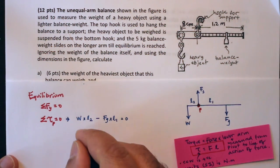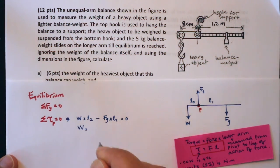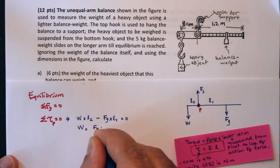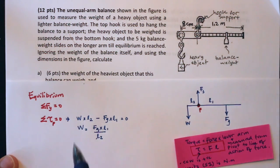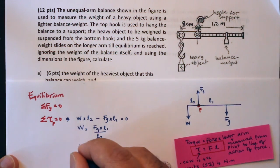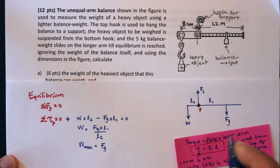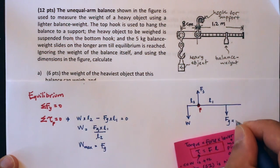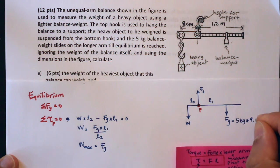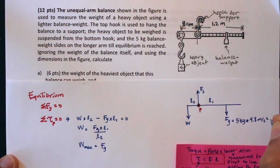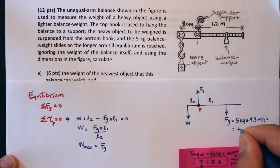And this is how you would calculate what the weight is of the heavy object. You manipulate this, add Fg times l1 to both sides, and then divide both sides by l2. You get this equation for W. And of course, if you want the maximum weight, then Fg is constant because that's just the weight of the balance, and that's actually 5 kilograms multiplied by the acceleration due to gravity, 9.8 meters per second squared, and that's 49 newtons.